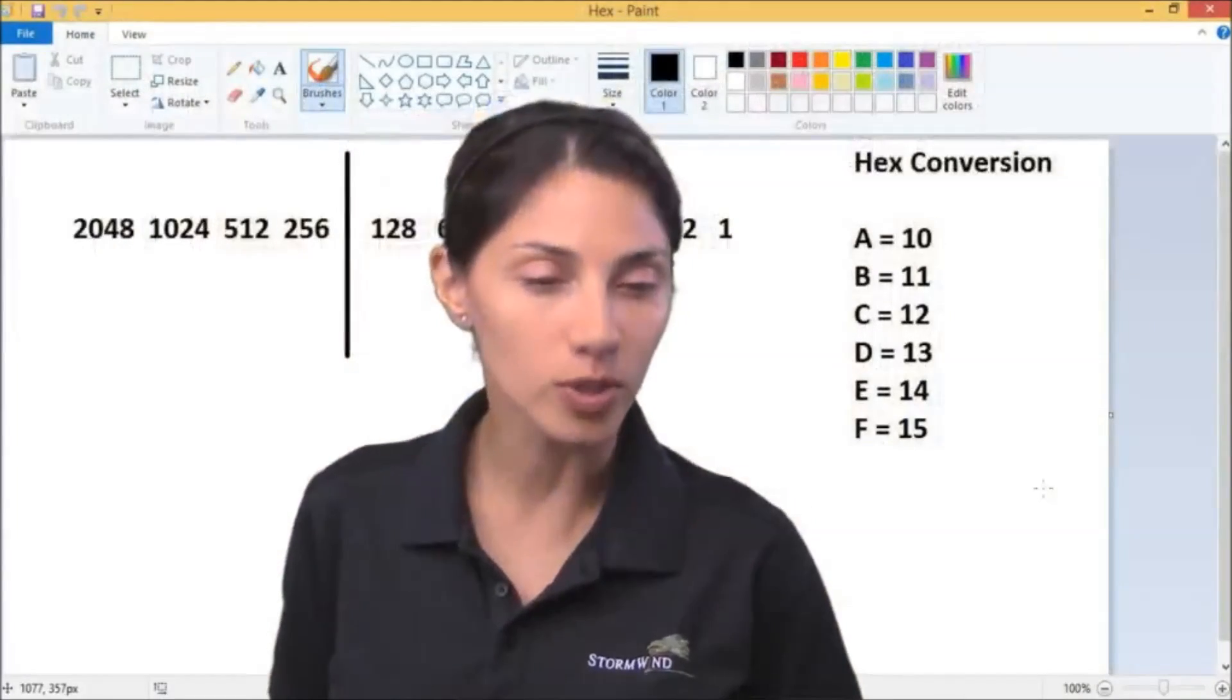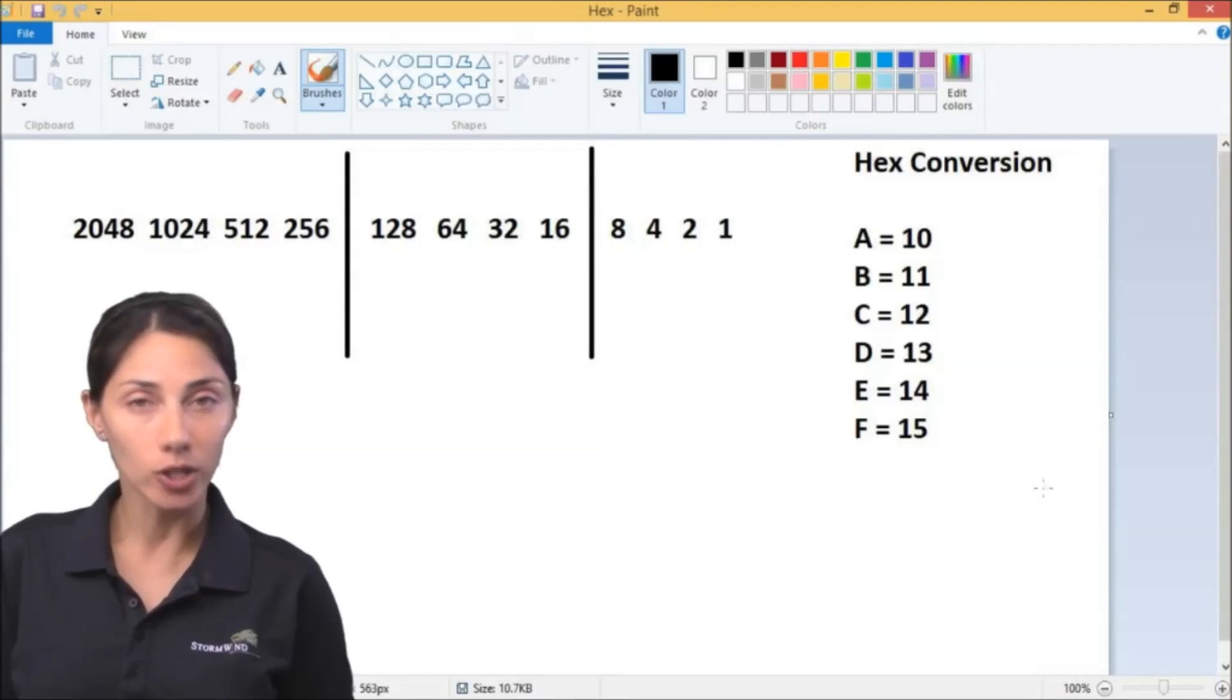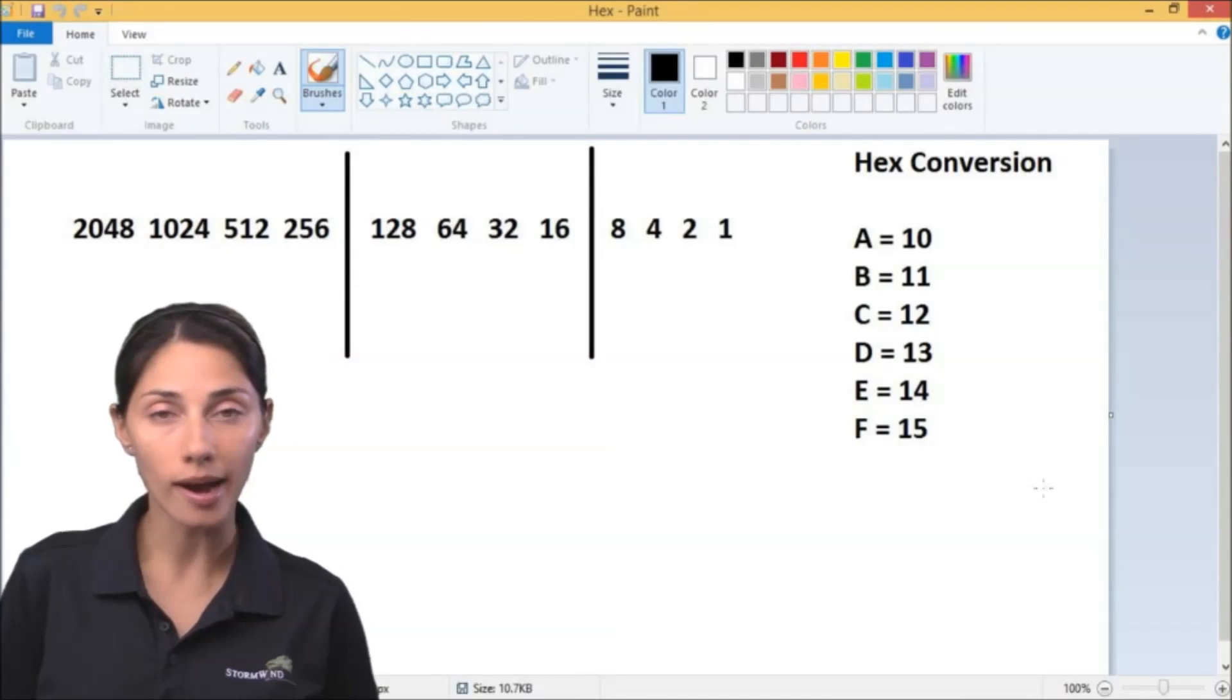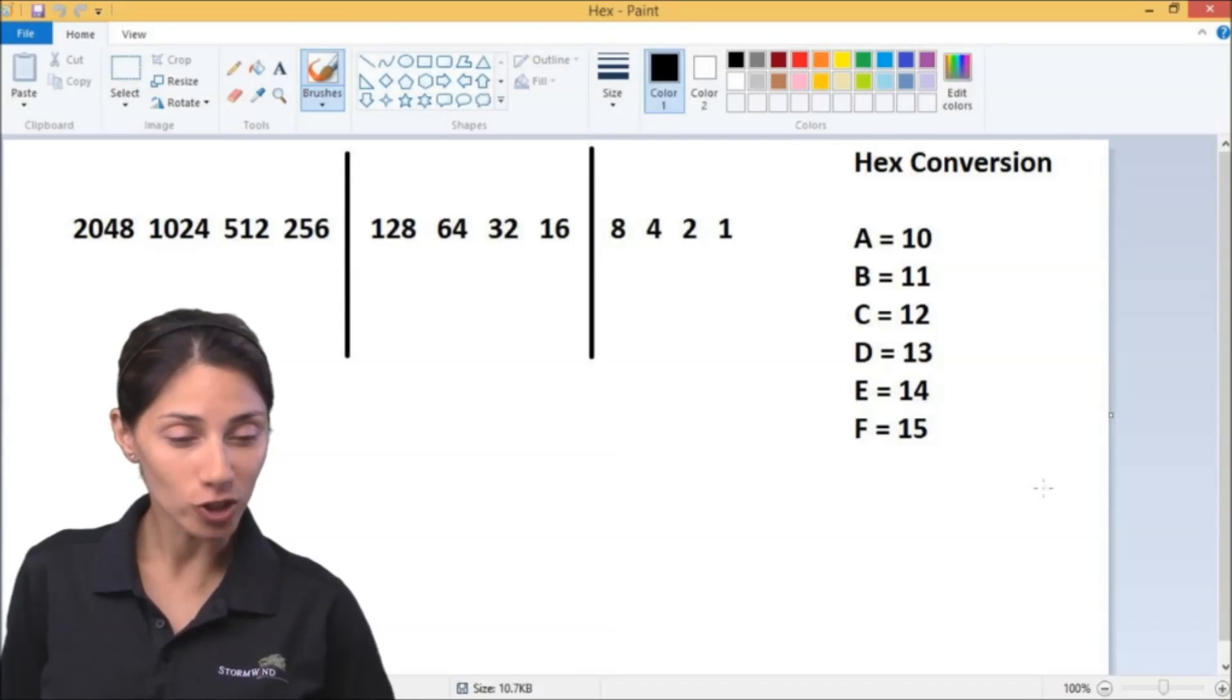So we're going to kind of go back around to the concepts that we looked at when we were doing things like subnetting and converting our IP addresses into binary. And what I did was I actually started to put together this whiteboard that we're going to kind of utilize to be able to do some quick conversion.